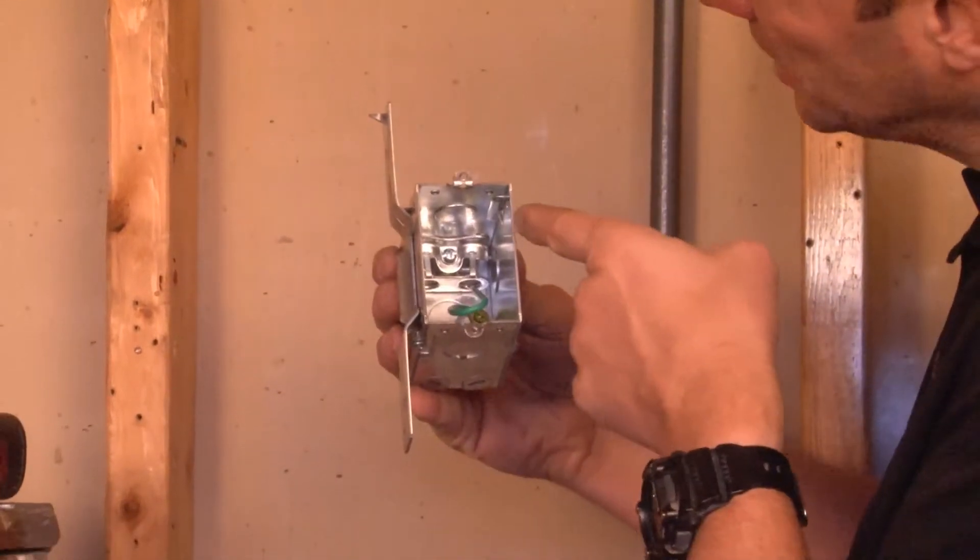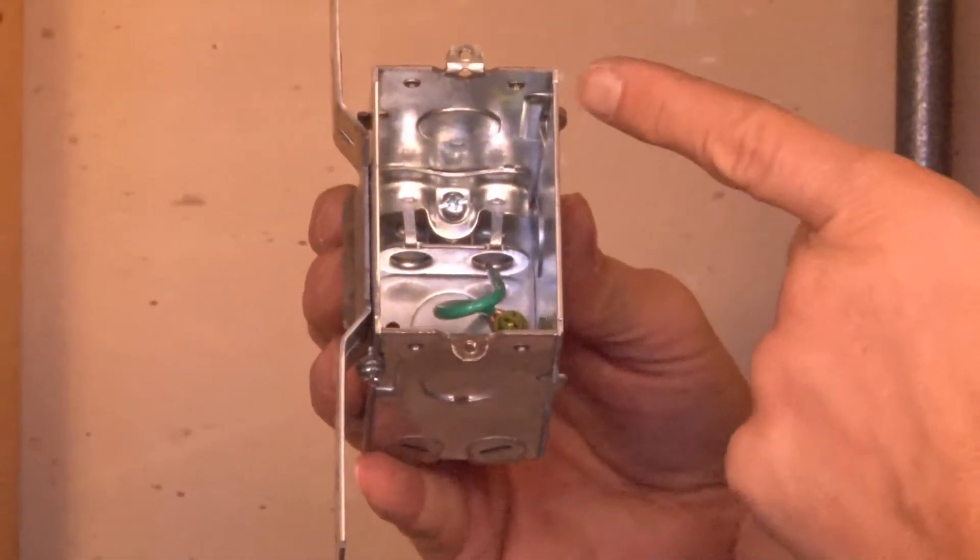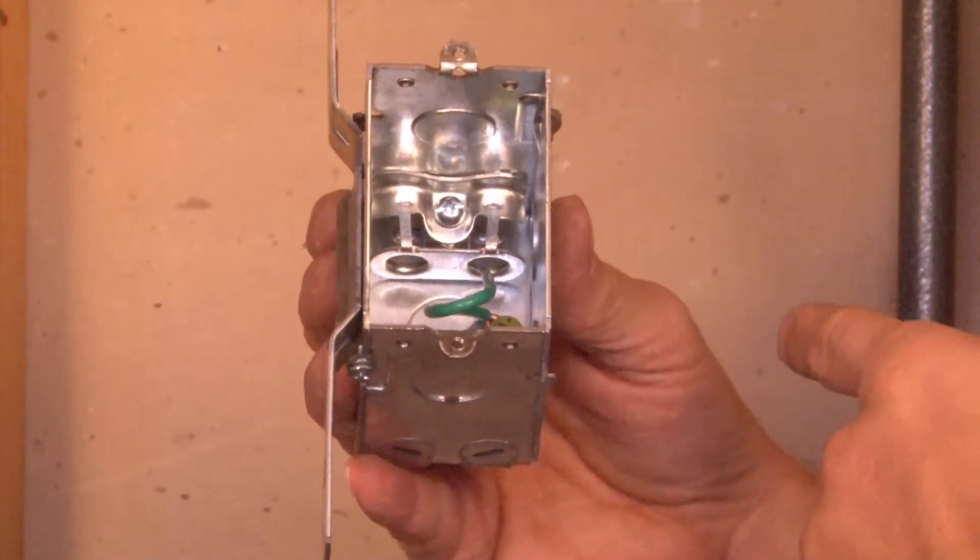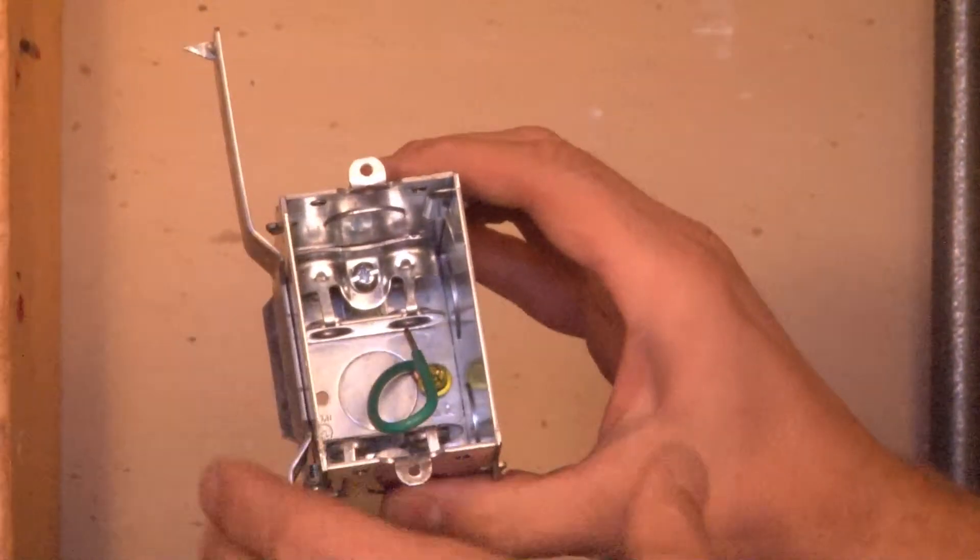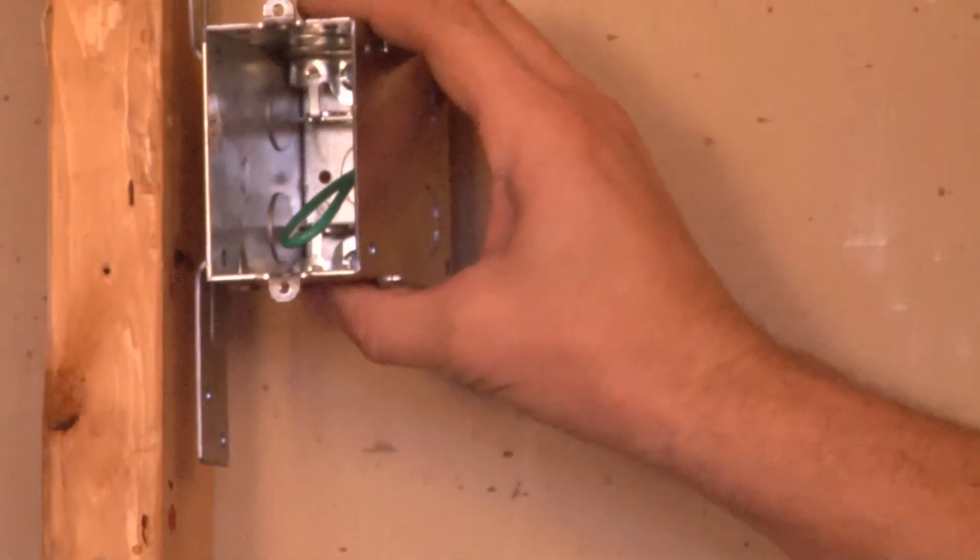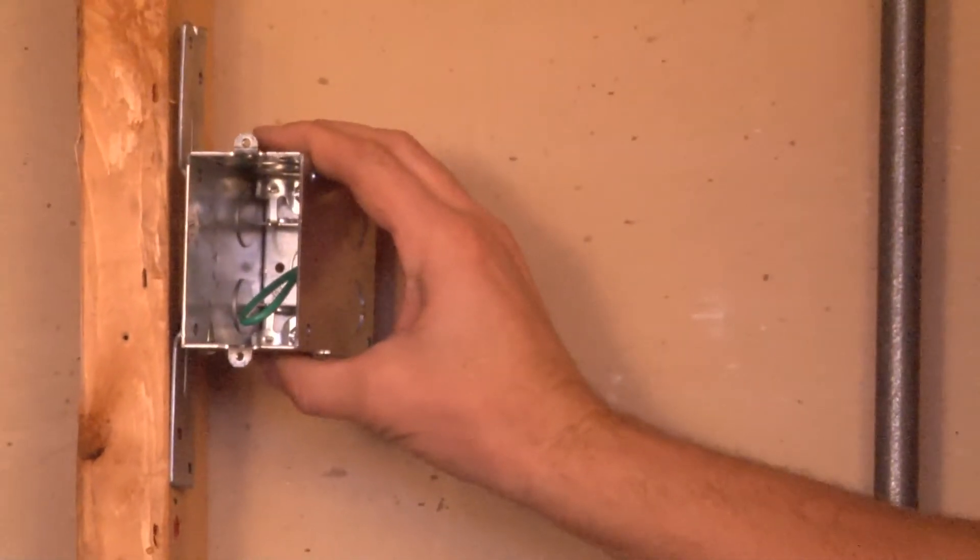As you can see inside the box, there's a set screw that can be tightened on the flexible metal conduit and the conductors brought out the front of the box. To install this particular box, you simply align the flat bracket with the front edge of the metal stud.